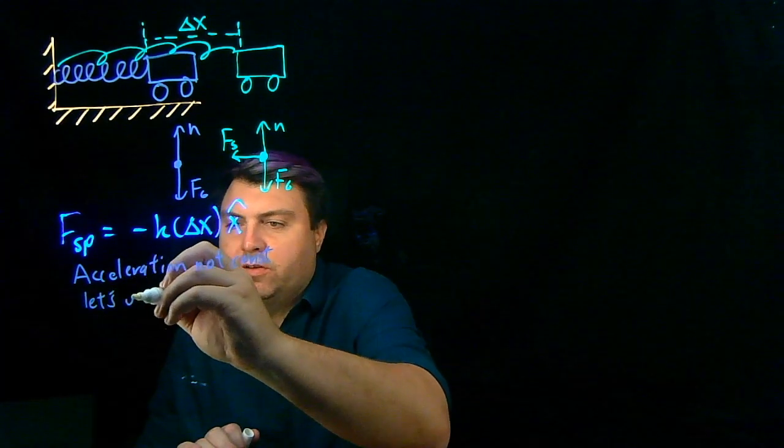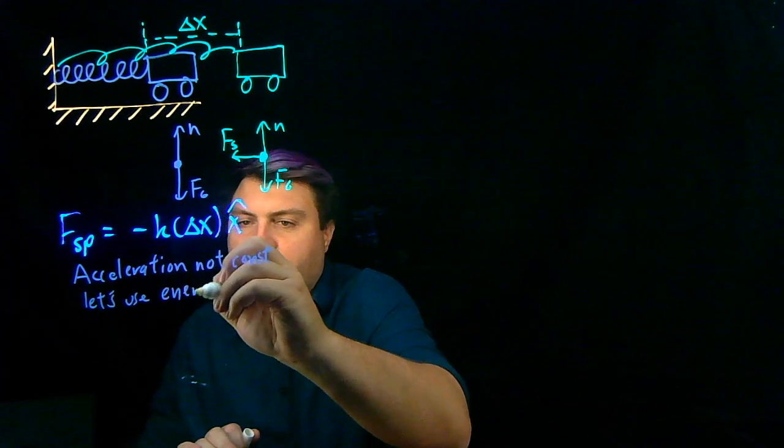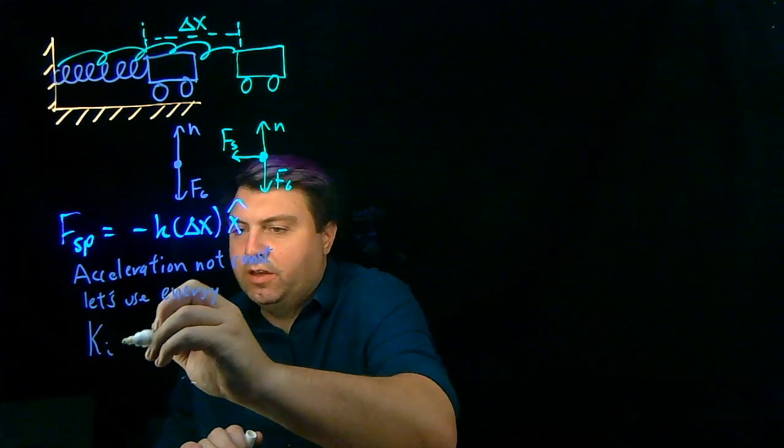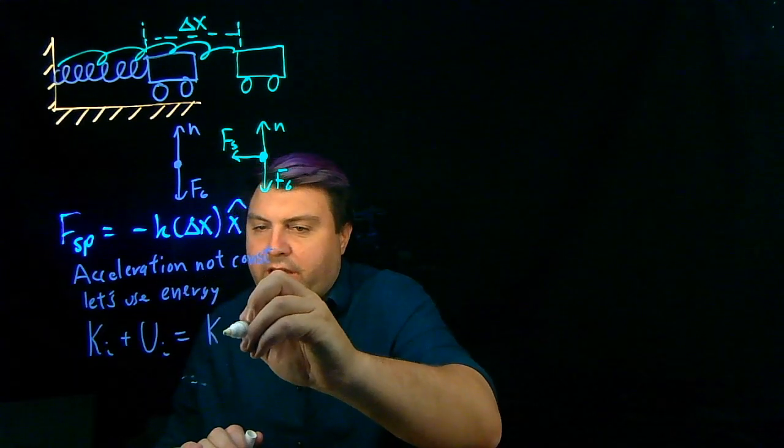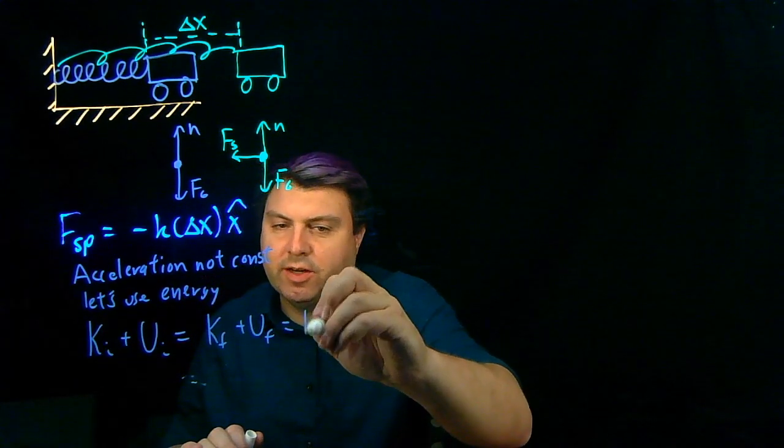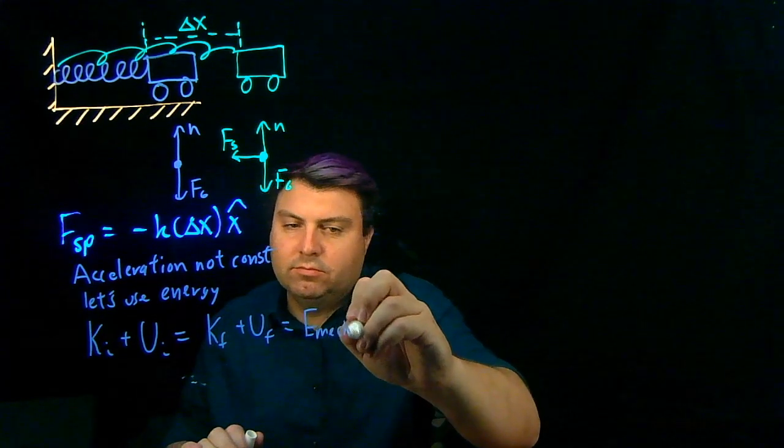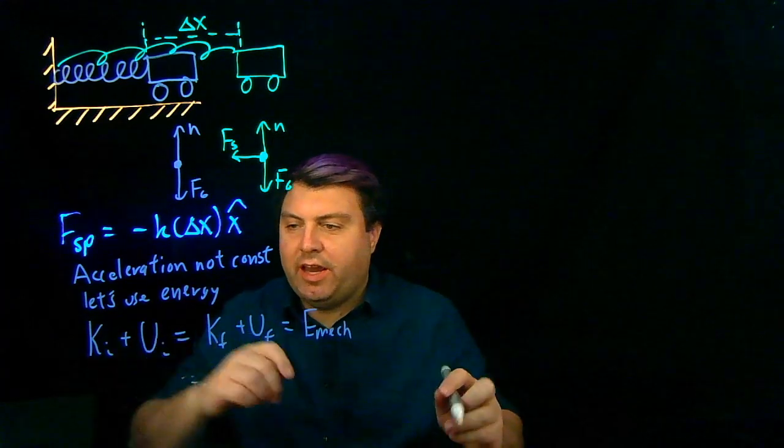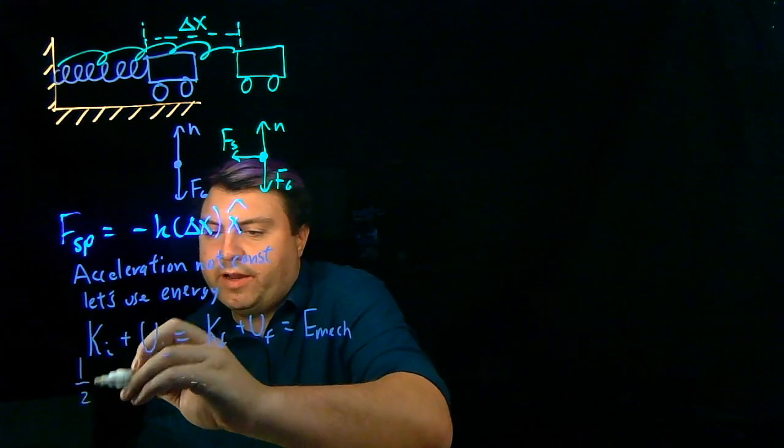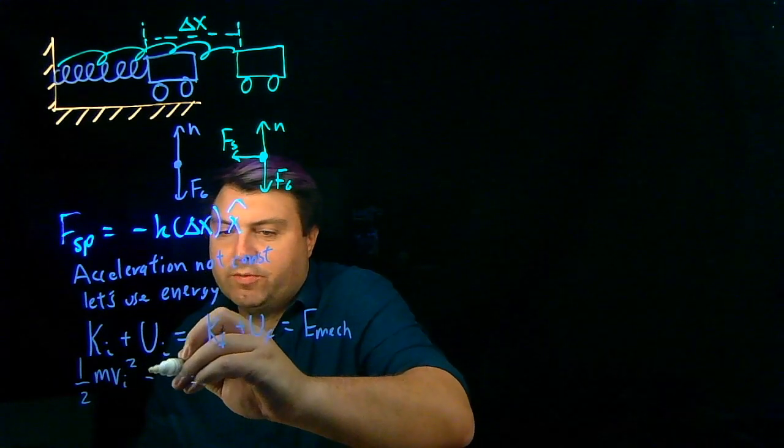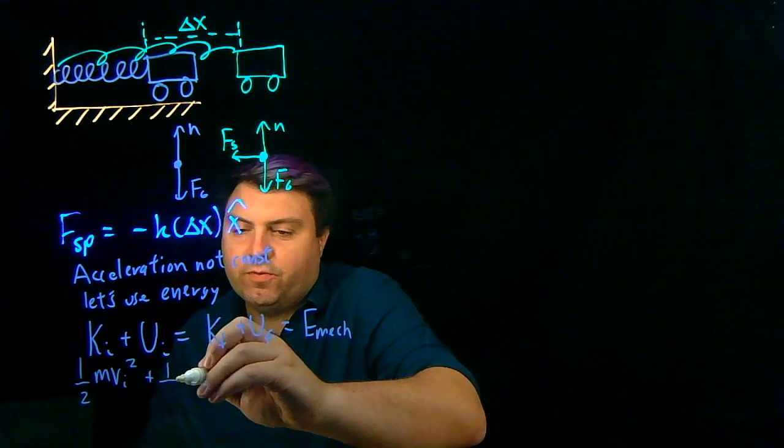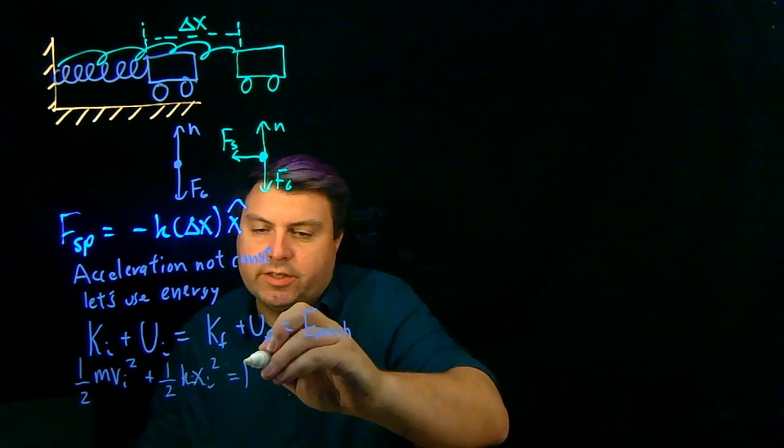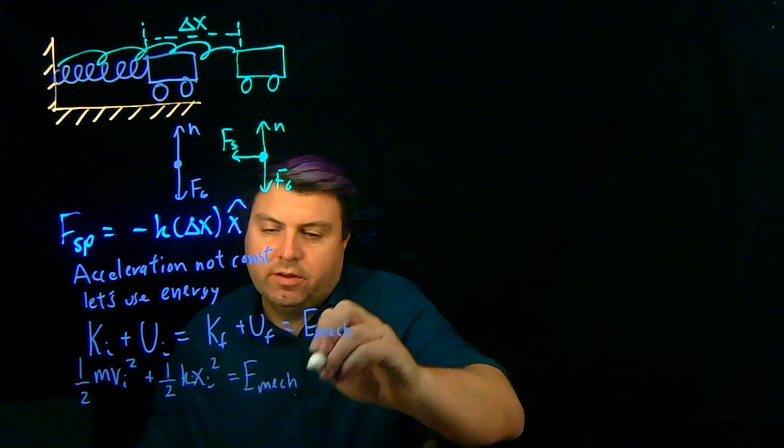So let's use energy. If we're using energy, we're saying ki plus ui equals kf plus uf equals some constant mechanical energy. So if we're doing this, then our ki is going to be one half m v sub i squared. And our spring potential energy from a spring is one half k x sub i squared. And then we're just going to say this is equal to the mechanical energy.